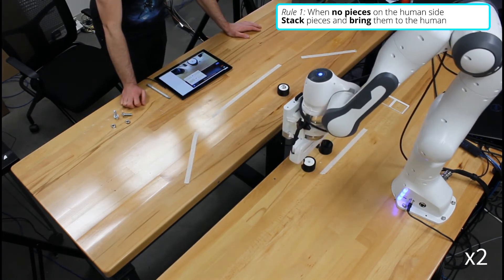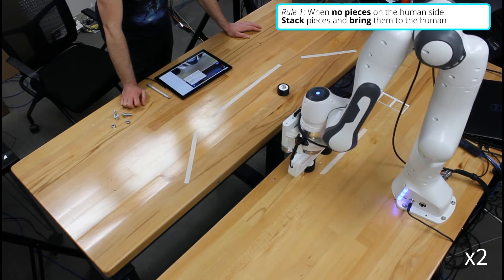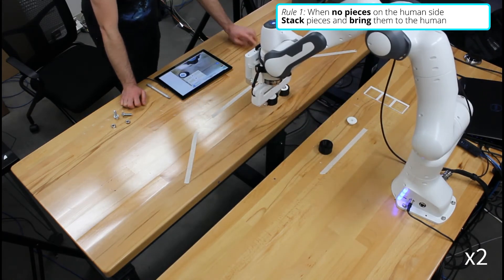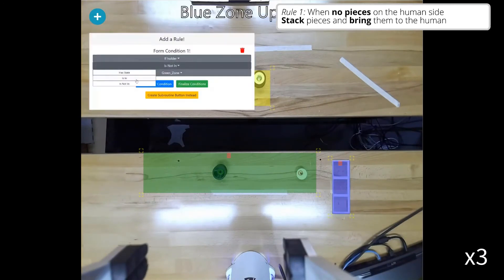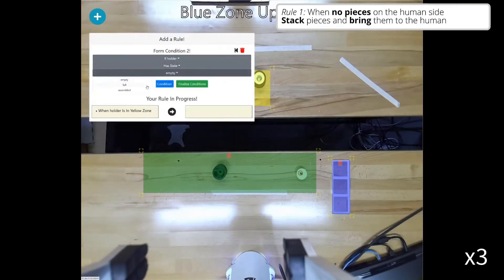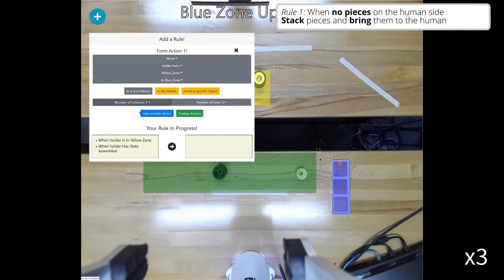When the user places the assembled piece in the workspace, the system recognizes that the state of the object has changed to assembled. The user can program a second trigger action pair which detects an assembled object in the human workspace and moves the object to the final assembly region within the blue grid.